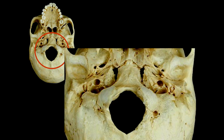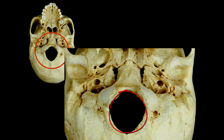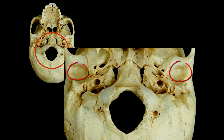Other structures we see here are the occipital condyles and the foramen magnum. These are the styloid processes. And right here are some indentations — indentations are referred to as fossae. This is where the mandibular condyles fit into, so these are going to be called the mandibular fossae.